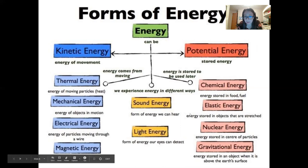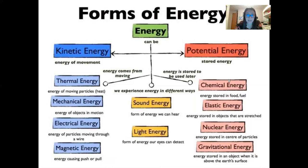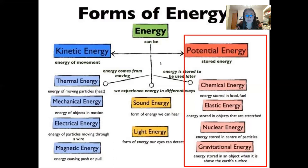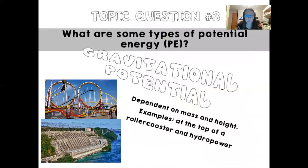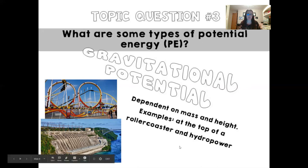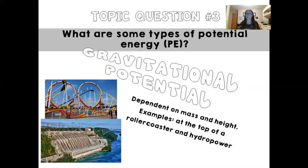Potential energy is stored energy, and we'll talk about different types: chemical energy, elastic energy, nuclear, and gravitational potential energy. Gravitational potential energy depends on an object's height. At the top of a roller coaster you have the most gravitational potential energy, because gravity wants to pull you down toward the earth. Hydropower also uses gravitational potential energy — the water behind a dam builds up and uses that height difference to create power in a turbine.